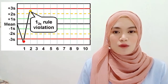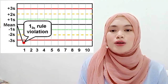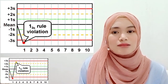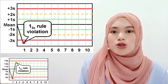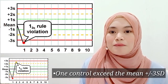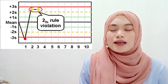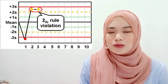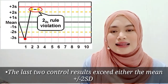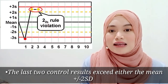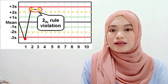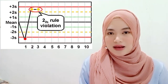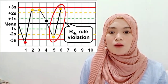The next rule is the 1-3s. In 1-3s, it means that one control exceeds the mean plus or minus 3 SD. It's just the same as the 1-2s — it only differs in the location of control. Next is the 2-2s rule: the first digit stands for the quantity of the control and the lowercase stands for the location. So 2-2s means that the last two control results exceed either the mean plus or negative 2 SD. As you can see on the graph with the red marker, it really shows the last two control results exceeding either the mean positive or negative 2 SD.